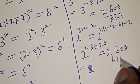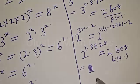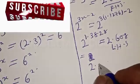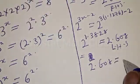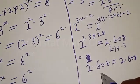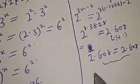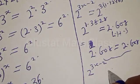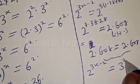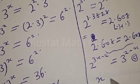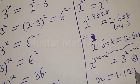Therefore, we can see that the left-hand side is equal to the right-hand side. That is, 2.608 is equal to 2.608. So we satisfy the given equation. That is, 2 raised to power 3x minus 2 is equal to 3 raised to power 2 minus x, at x equal to 1.1276.